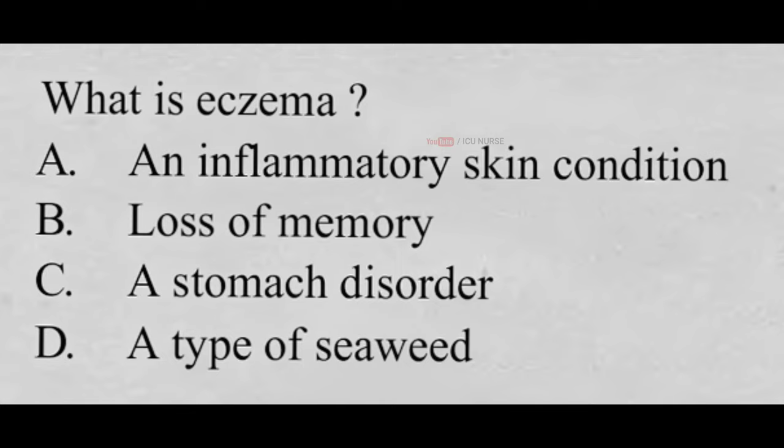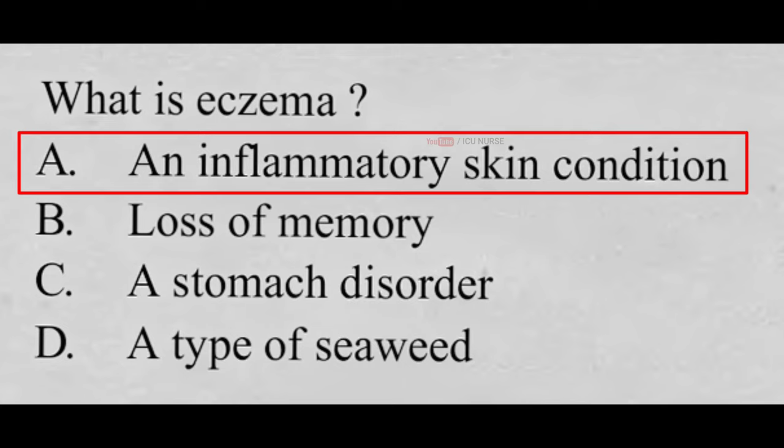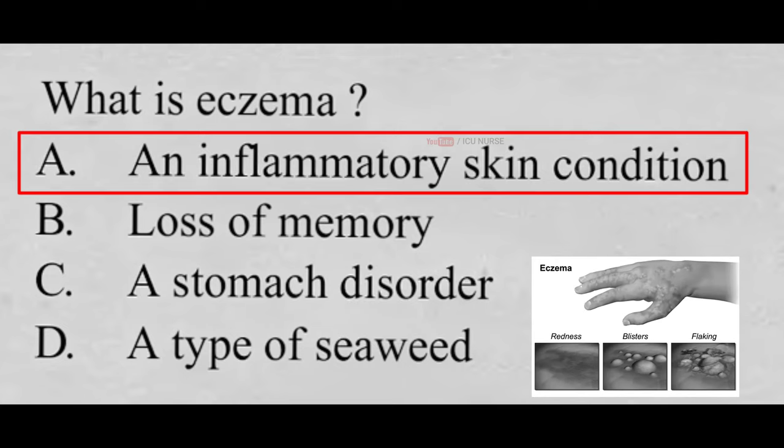What is eczema? A. An inflammatory skin condition, B. Loss of memory, C. A stomach disorder, D. A type of seaweed. And the correct answer is A, an inflammatory skin condition. Eczema is a condition that causes inflamed, itchy, cracked, and rough skin.